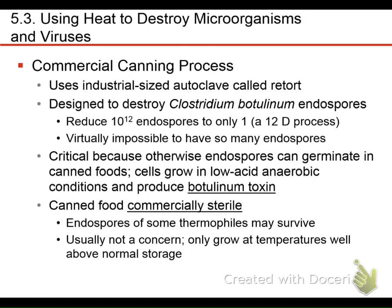When we can food, it's usually not completely sterile but close — we call it commercially sterile. There might be some endospores inside, but the number will be pretty close to zero. Most organisms that might remain only grow well at normal storage temperature. We also put weak acids in intentionally so that if some spores that survived germinate, they won't be able to grow in that mildly acidic environment.